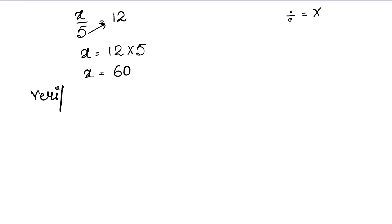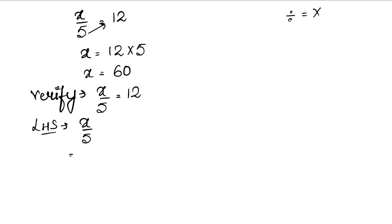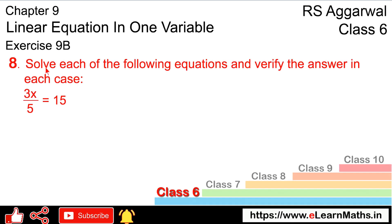Now we have to verify that the right hand side is correct or not. We substitute the same value into the left hand side. Left hand side was x divided by 5. So x is 60, divided by 5. 60 divided by 5 is 12. So right hand side is 12 and left hand side is 12. We can say that left hand side is equal to right hand side.